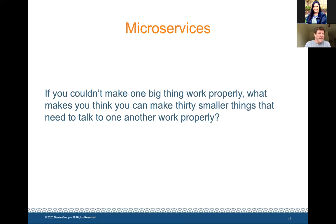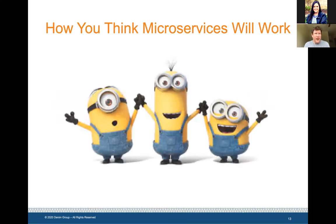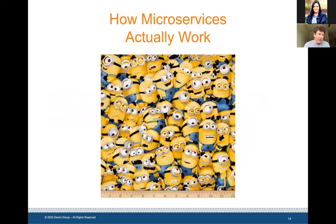As a side note about microservices: that's viewed architecturally as a panacea, and certainly there are great things that go along with microservices. But if you couldn't make one big thing work properly, what makes you think you can make 30 smaller things that need to talk to one another work properly? The perception is that microservices are one big smiling happy family, but how microservices actually work is more like sprawl — it can be a challenging transition to get all of these things to work productively together.